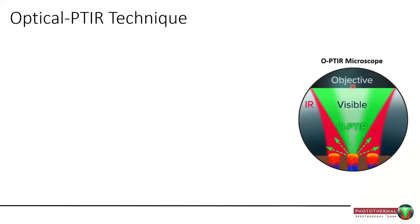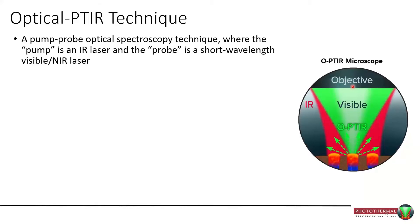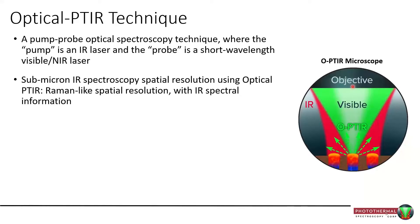OPTIR is a pump-probe optical spectroscopy technique where the pump is the infrared laser — typically a QCL, but it can also be an OPO — and the probe is a short wavelength laser, typically a 532 nm visible, or it could be a 785 near-infrared laser as well.